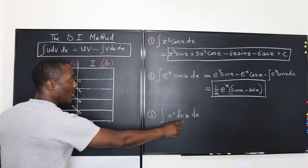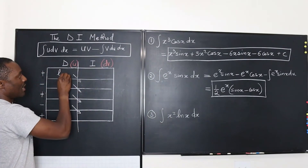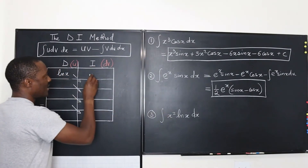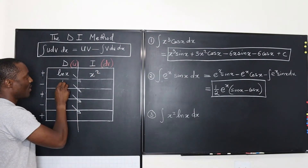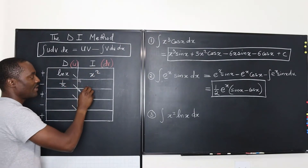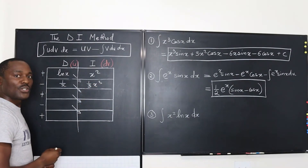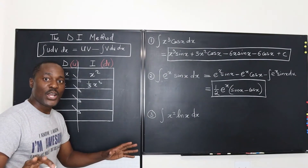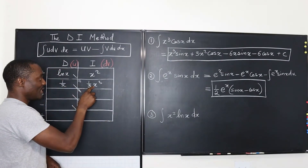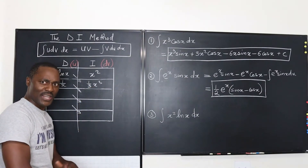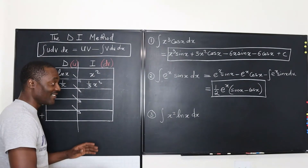So on the table, natural log of X must be differentiated — we put it here, and we put X squared on the integrate side. We differentiate ln X to get one over X, and we integrate X squared to get one third X cubed. Should we keep going? No, just stop. Because the product of these two will give you a polynomial, and you can integrate any polynomial. So you stop — that's all the work we've got to do.